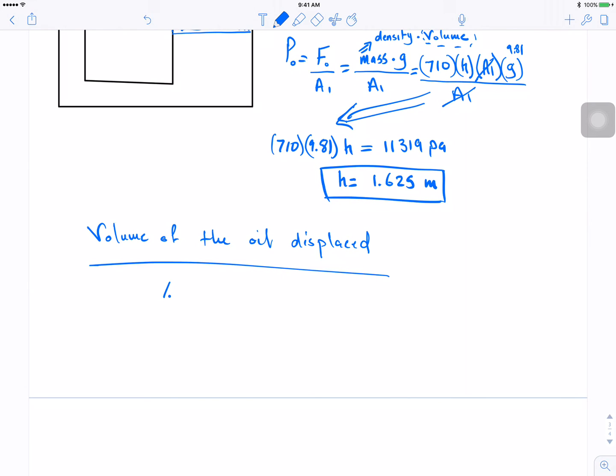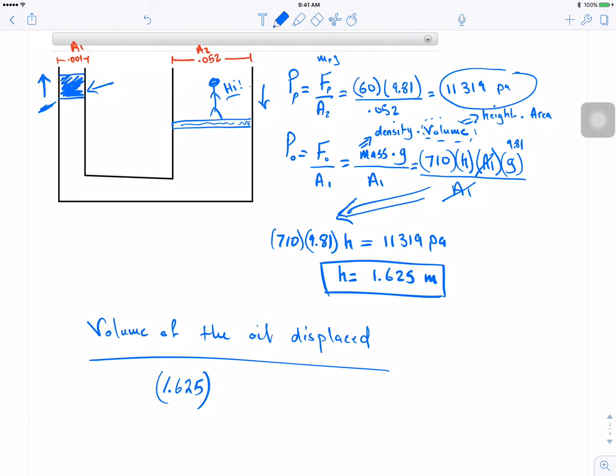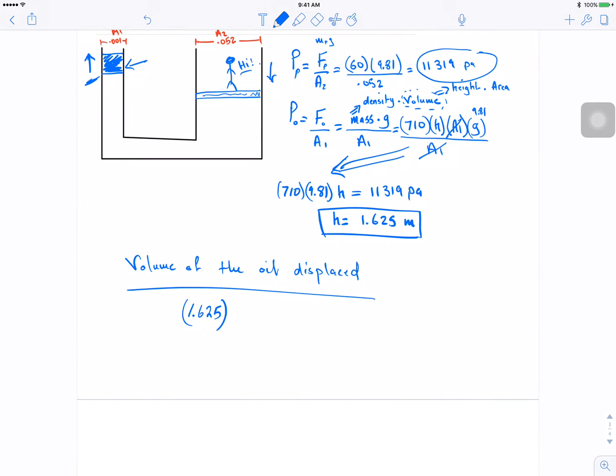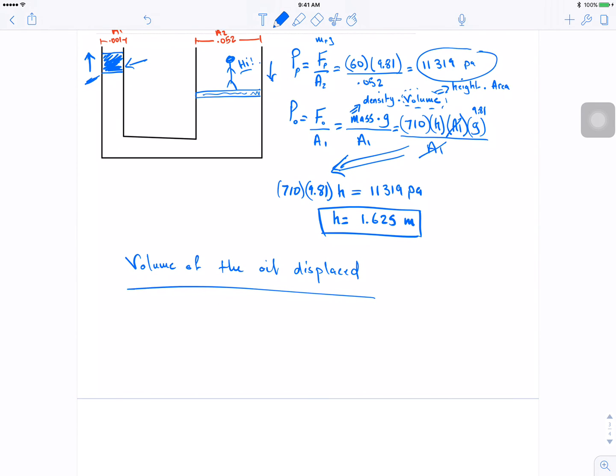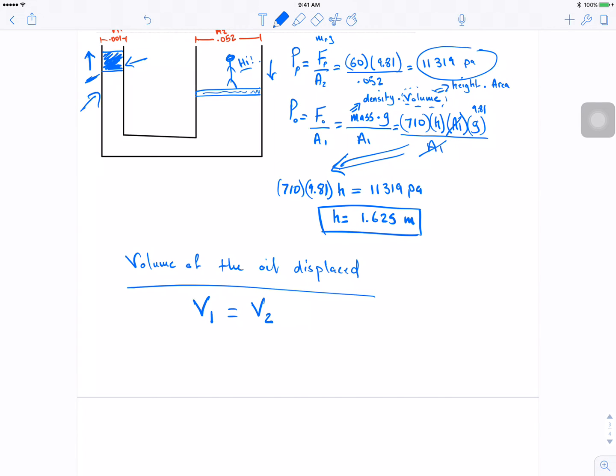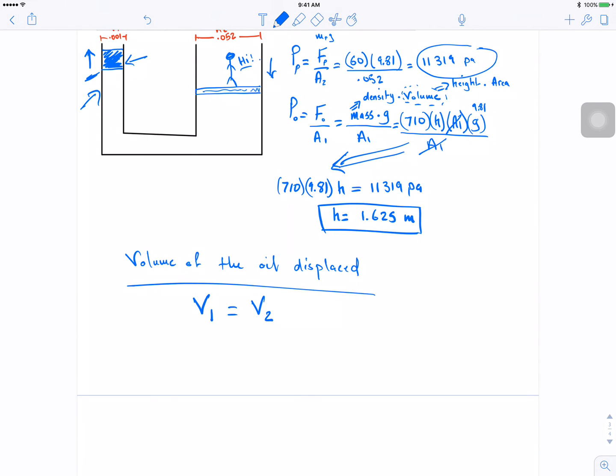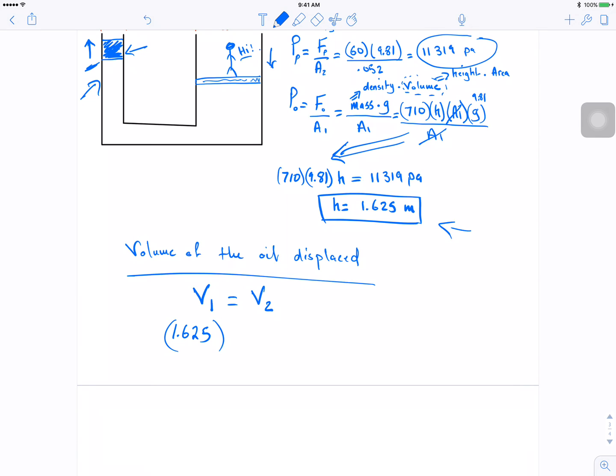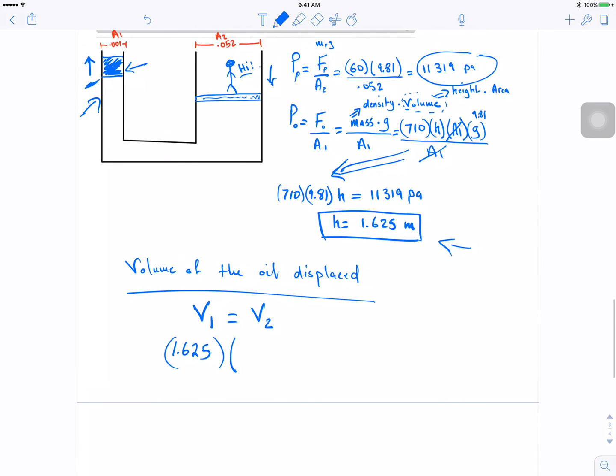So 1.625 is the height from here. So let me write it in a different way first before we go into that. So volume of 1 displaced is going to equal to volume of 2 displaced. So the volume of 1, which is on this area, is going to be 1.625, which is the height we got from here, the height that went up, times the area, which is 0.001.